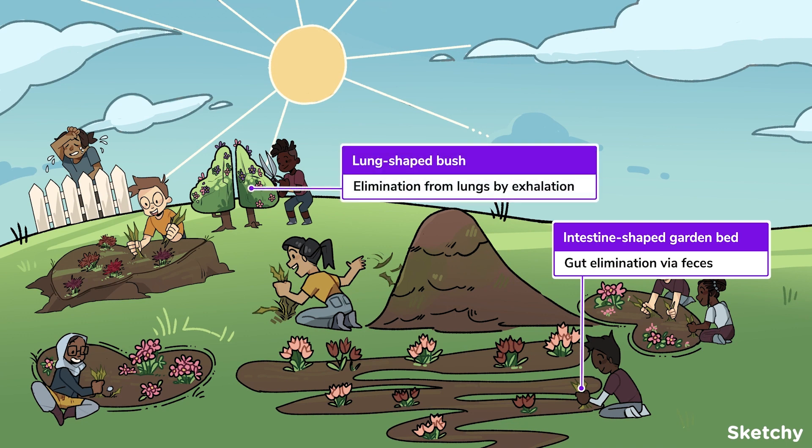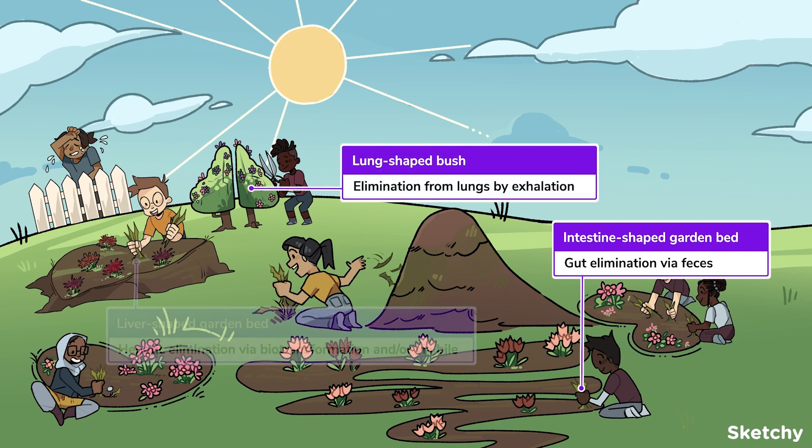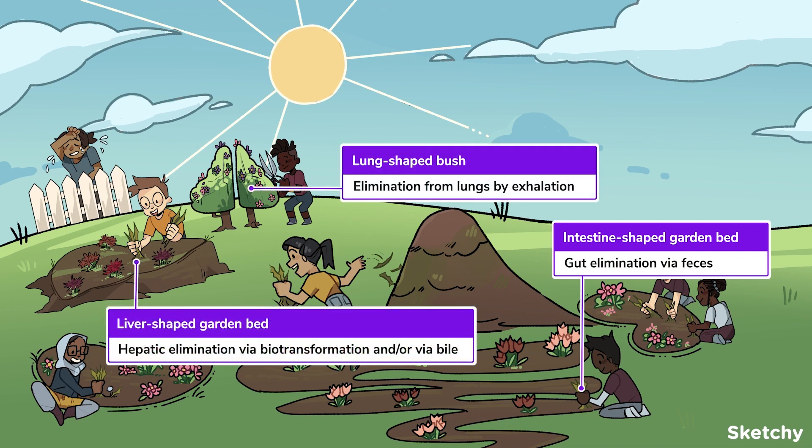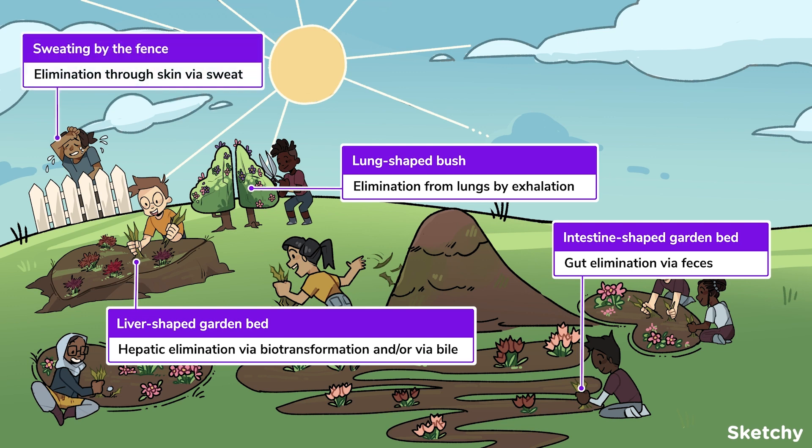Other key routes of elimination include via the gut in feces, through the lungs via exhalation of expired air, by the liver via bile, and through the skin via sweat. Remember, total clearance is the summation of clearance from all routes of elimination — so renal clearance plus hepatic clearance plus clearance via the lungs, and so on. We're clearing weeds from all these garden beds today, symbolizing the effort of multiple organs and systems in drug clearance.